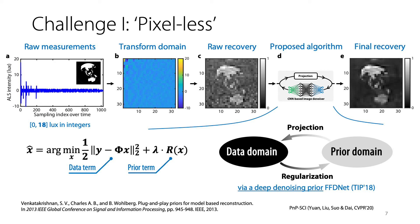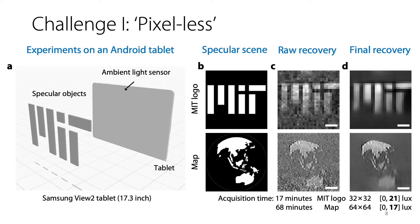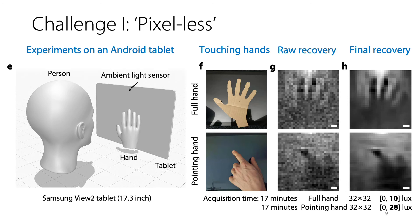Figures shown here are all from real experiments. We show imaging specular objects in front of a Samsung tablet using its embedded ambient light sensor. As you can see, fine details of this specular map scene have been preserved. The lower part is noisier because of the location of the ambient light sensor. We also show touch detection of a cardboard forehand and a real hand pointing on the screen — you may be able to distinguish at least four fingers in both cases.